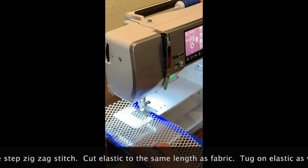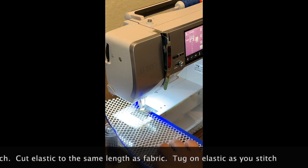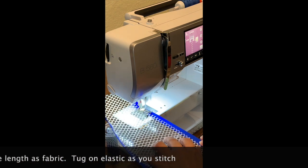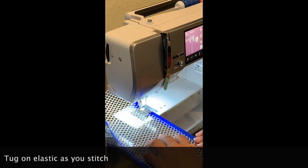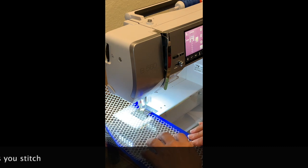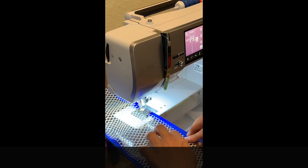You tug on the elastic just a little bit, and then you put your mesh halfway on the ribbon at the halfway point, and that allows you to fold it over and you start to stitch.